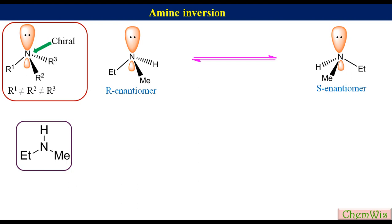The cause of faster interconversion is the low energy barrier for inversion. This phenomenon of interconversion of two enantiomers of a chiral amine is called amine inversion. Now let's understand how this phenomenon occurs.